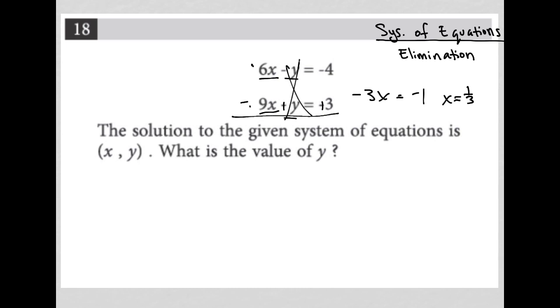It seems pretty easy. The question says the solution to the given system of equations is x comma y. What is the value of y? Well, I already figured out that x is equal to 1 third. So what if I just go back now and go back to my, let's say, the first equation, 6x minus y equals negative 4. And now, because I know x equals 1 third, I replace x with 1 third.